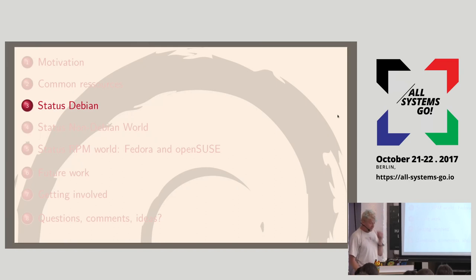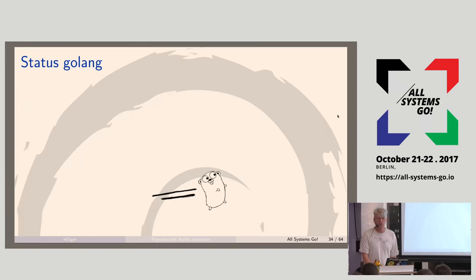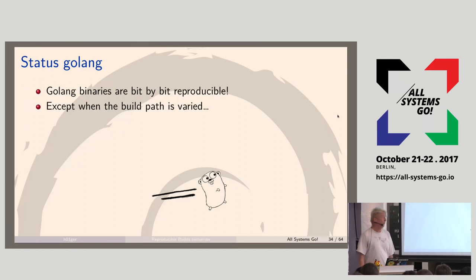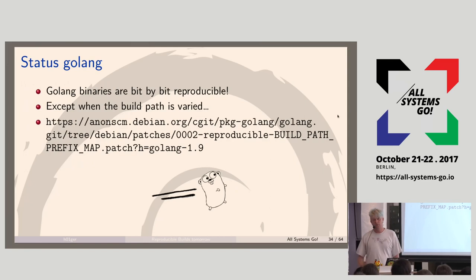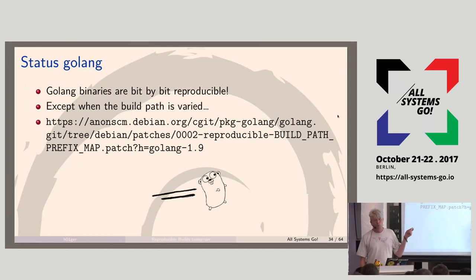Now the Debian status — let's start with Golang since this is a Golang conference. Golang binaries are bit-by-bit reproducible, which is great. But when the build path is varied, then not. That's quite a common problem and a very easy fix — you just rebuild in the same directory. But Michael Stapelberg also wrote a patch for Golang which is in Debian main, where you can vary the build path and the result will still be the same.